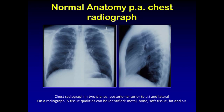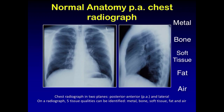On a chest radiograph, there are five tissue qualities that can be identified: metal, bone, soft tissue, fat, and air. This applies to any radiograph.